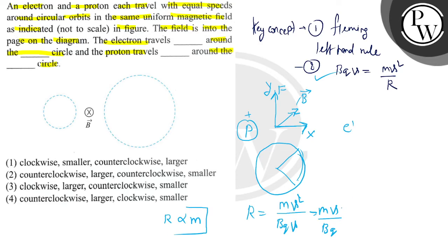Speed, magnetic field, charge are all constant. So here we can see the radius is not constant. The radius is dependent, because it depends on mass of the particle.